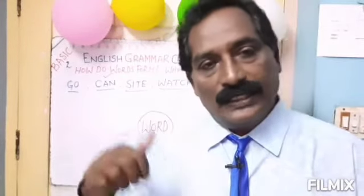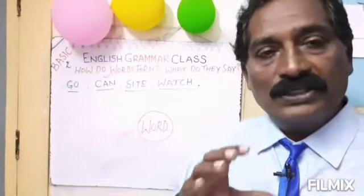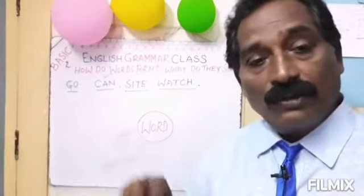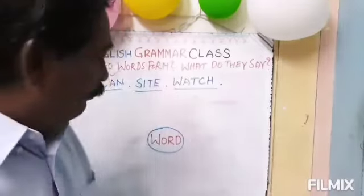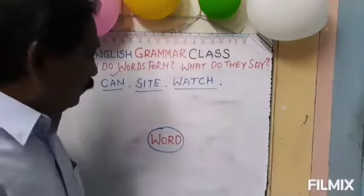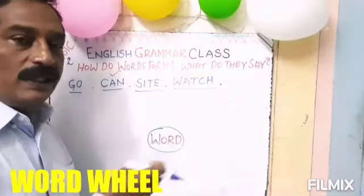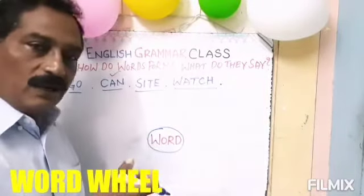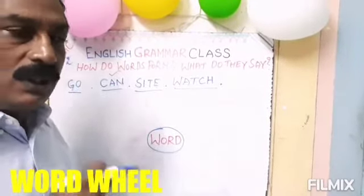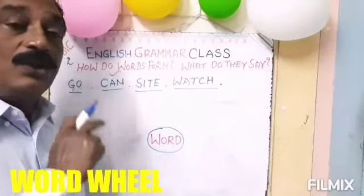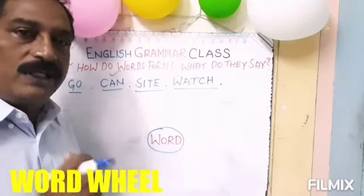Let us see how these words help us to understand different things related around them. Look at the word. What does a word tell us? We learn now through this word wheel. There are a few things that relate to a word, that go around a word. We must know them.